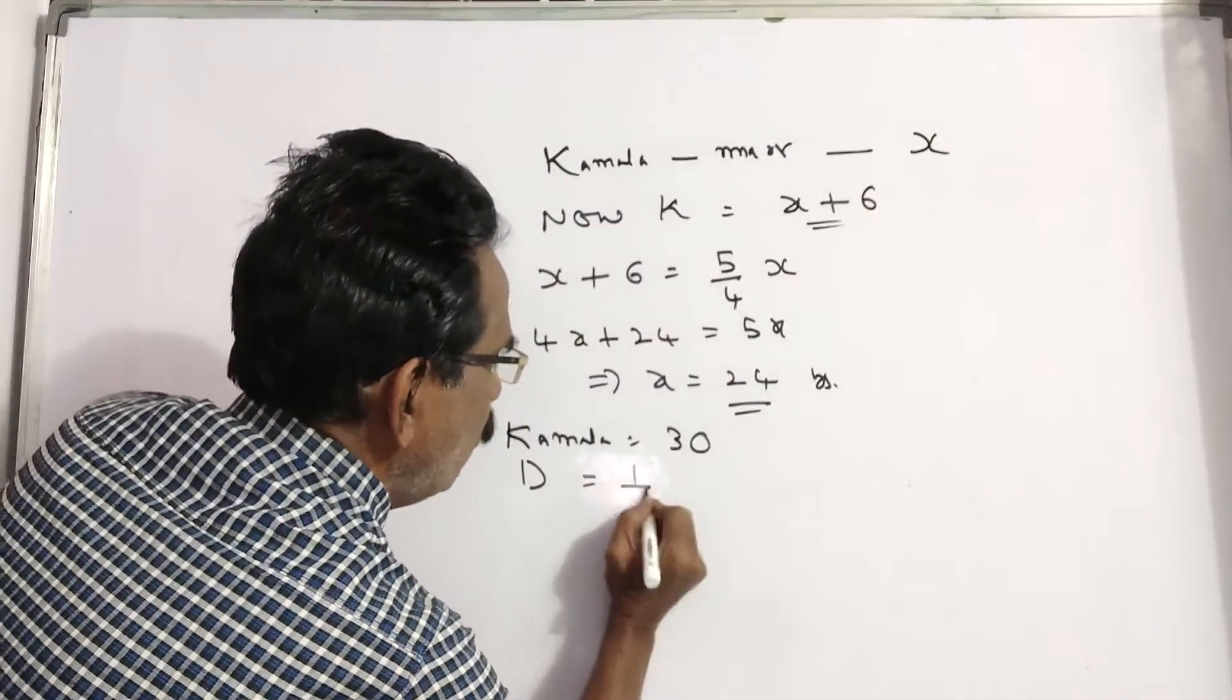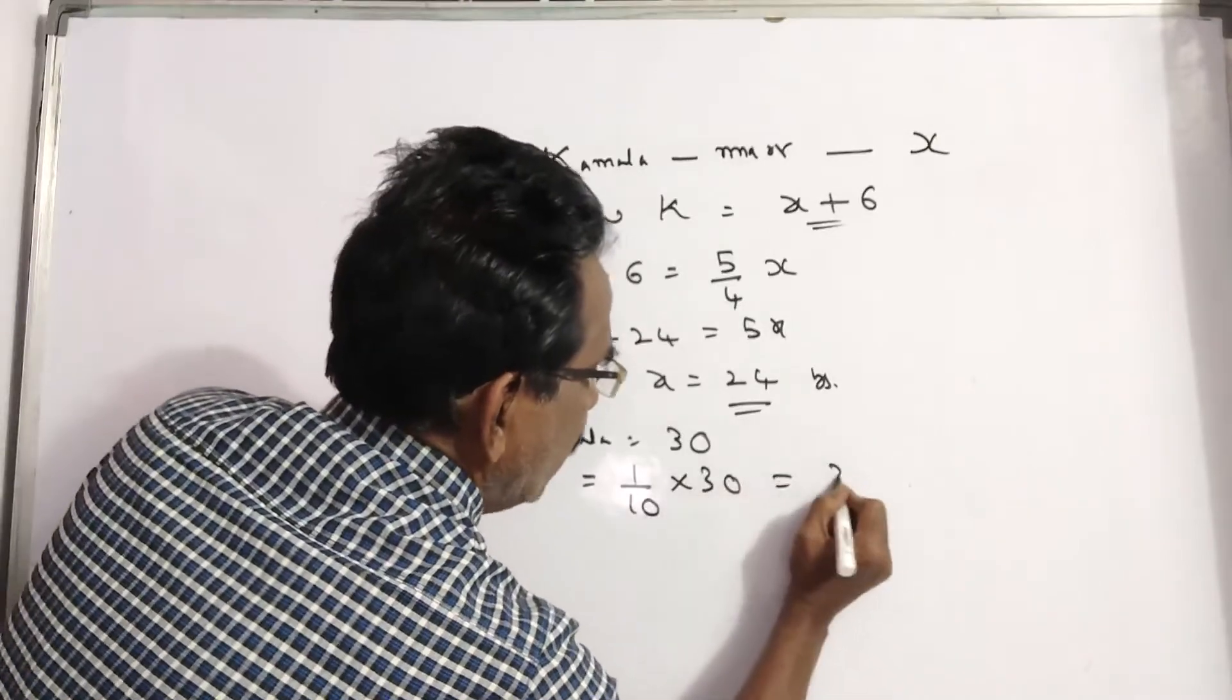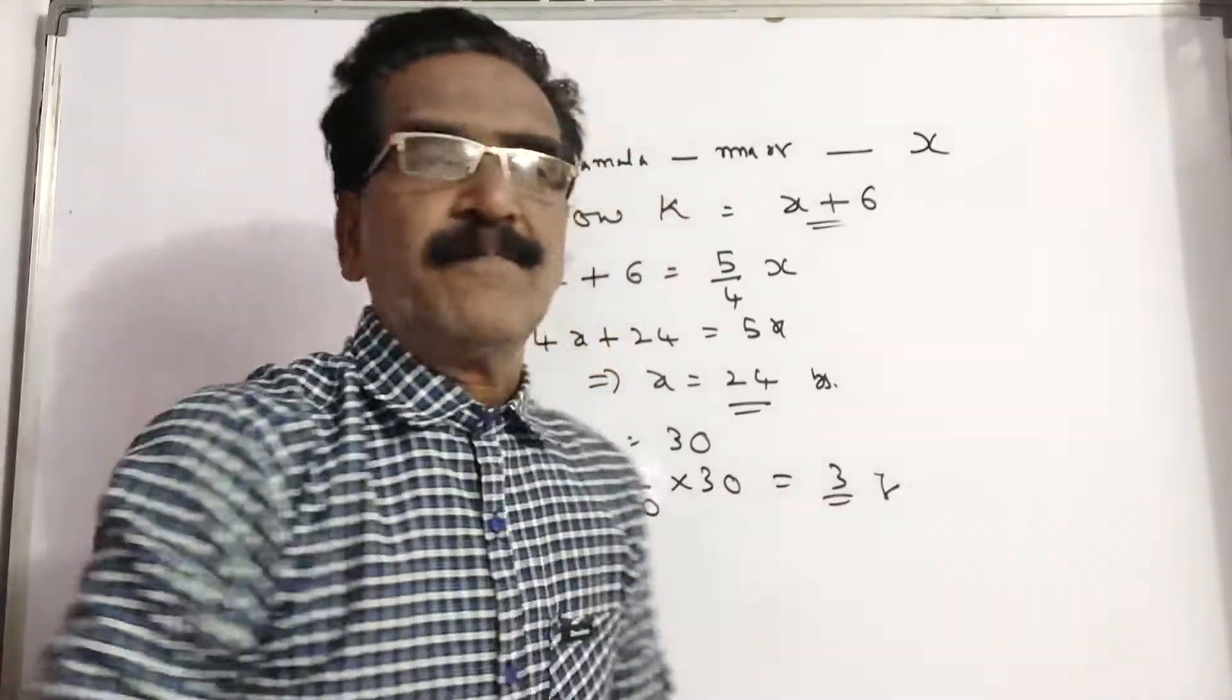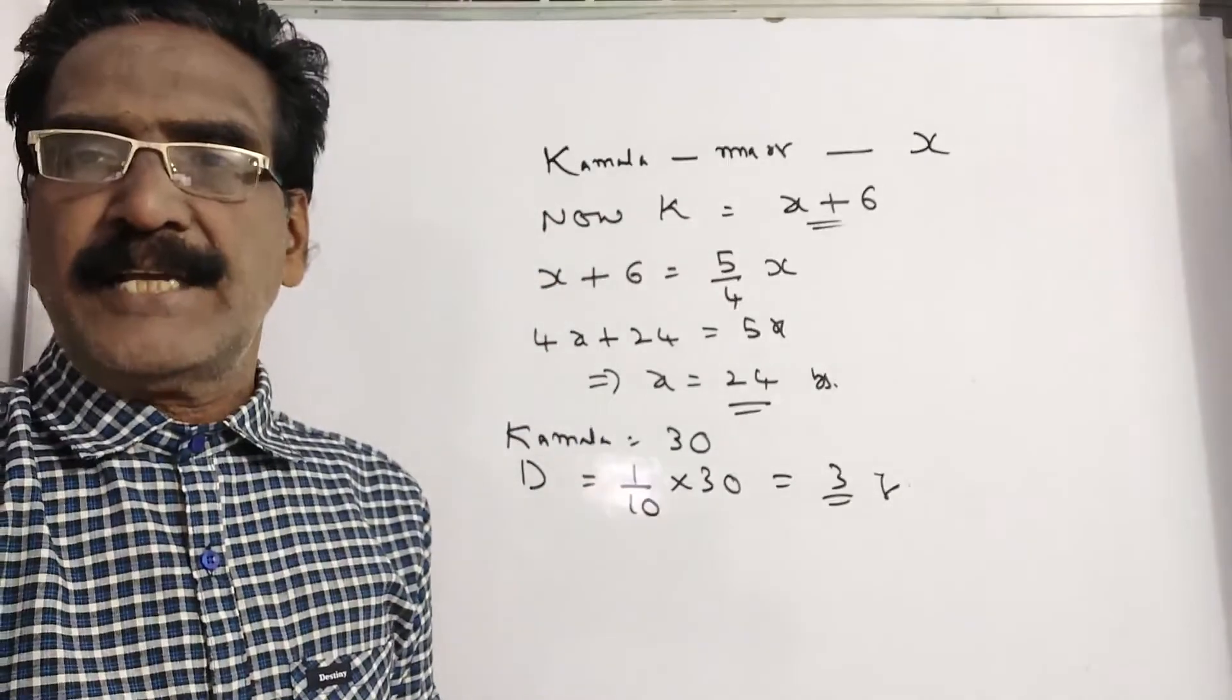Daughter's age is equal to 1 by 10th of Kamala's age, that is equal to 3 years, friends. Okay friends, thank you. Have a nice day.